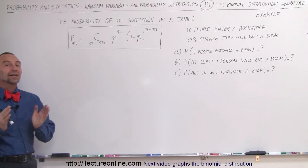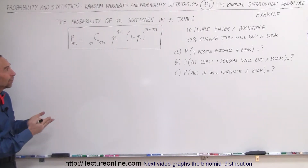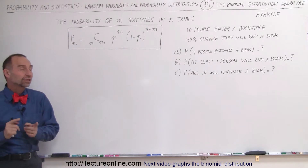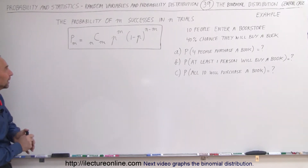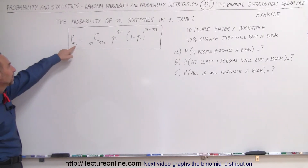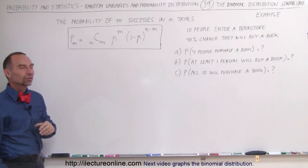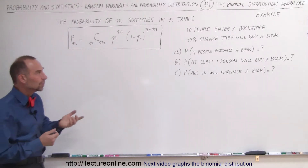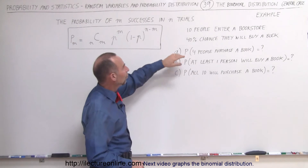Welcome to ElectroOnline. Let's do an example of how to apply the general equation, or general case, for binomial distribution — the probability of m successes when you have n trials. Let's go ahead and work that with the three cases in this example.